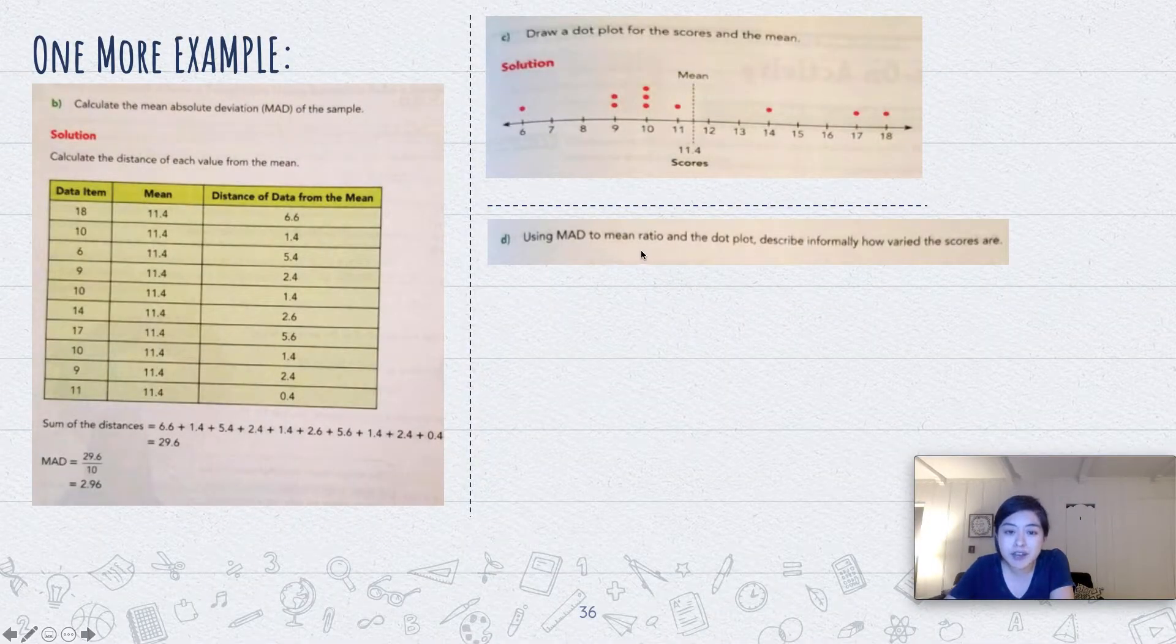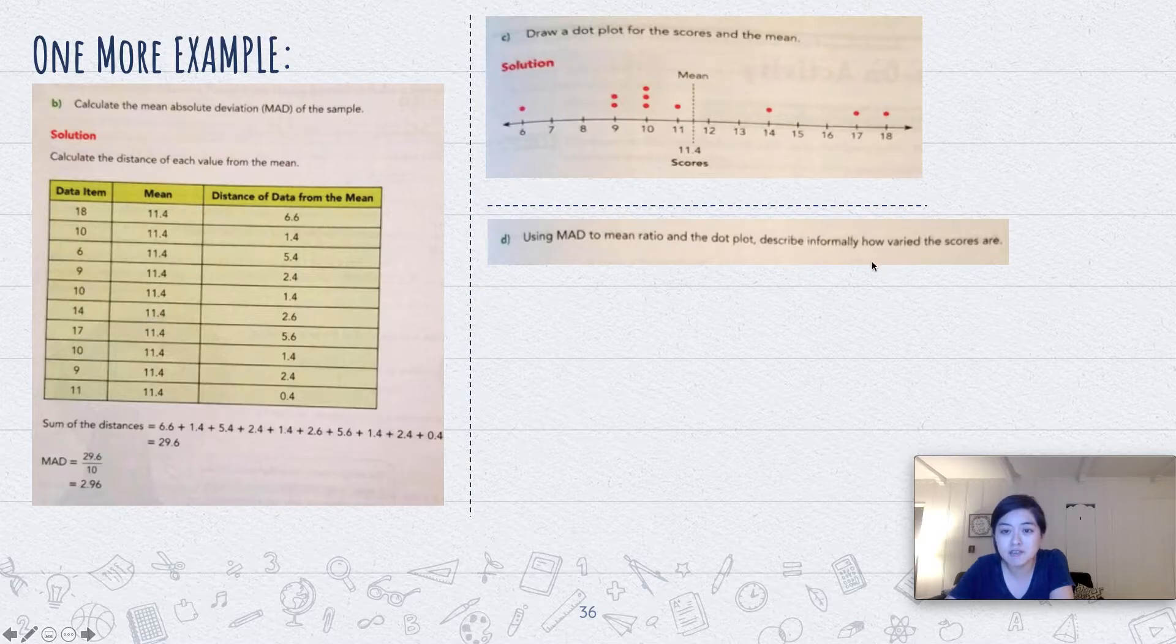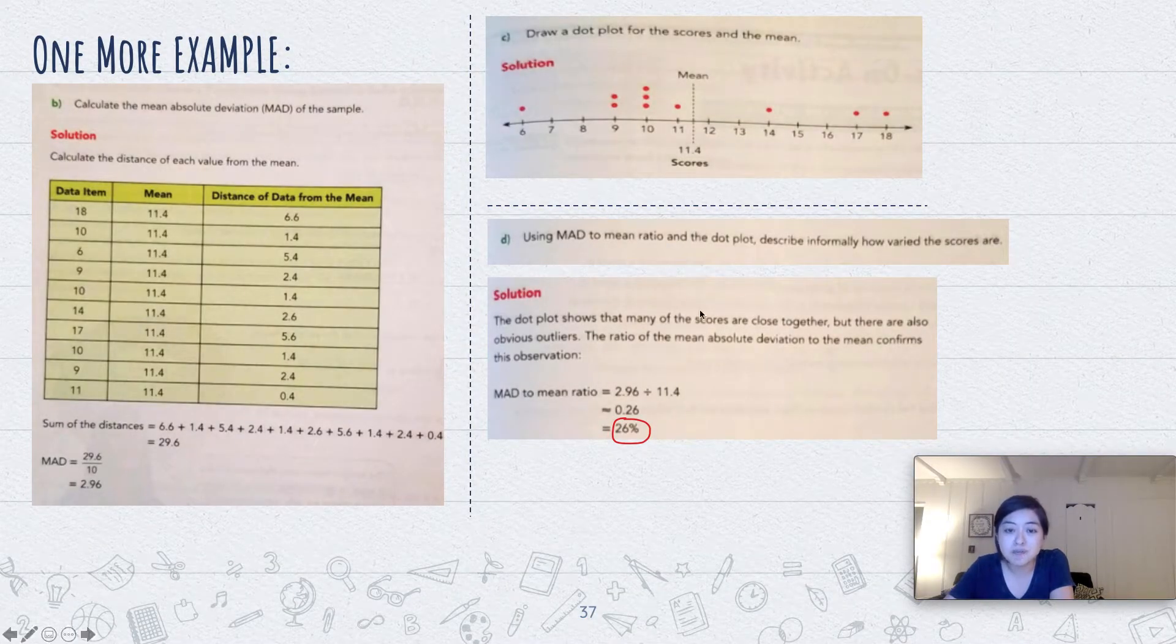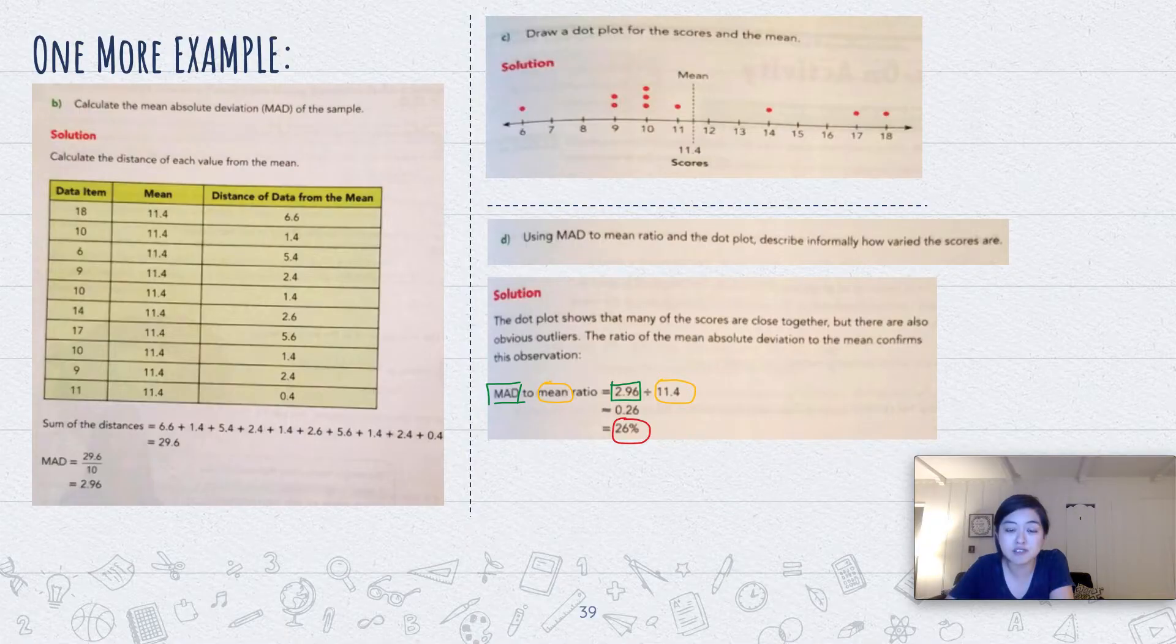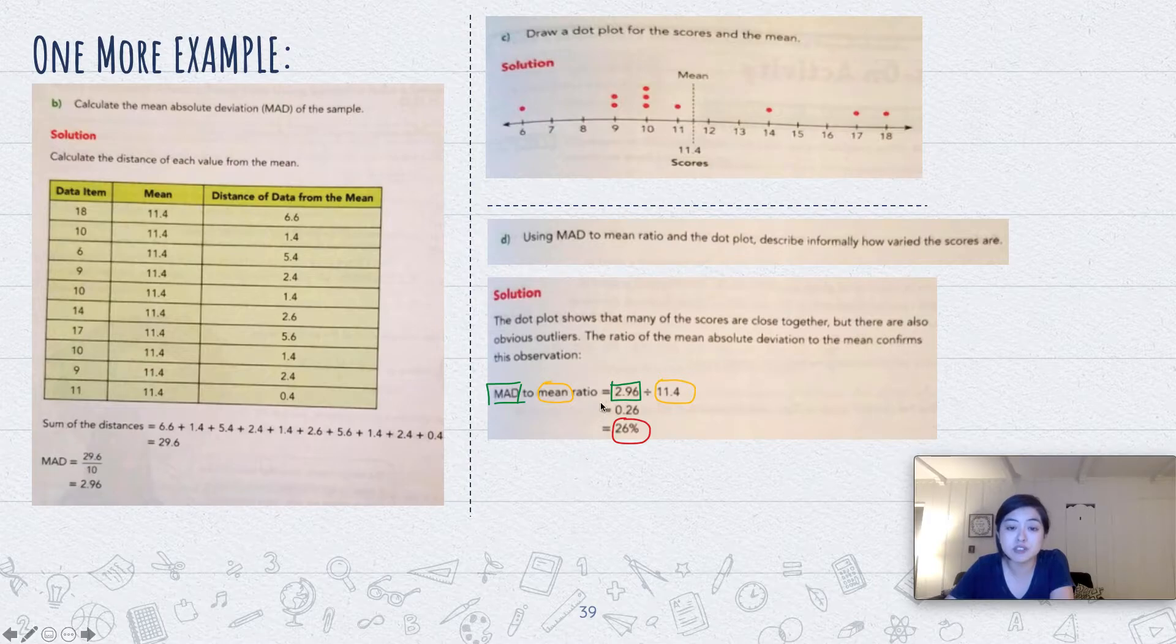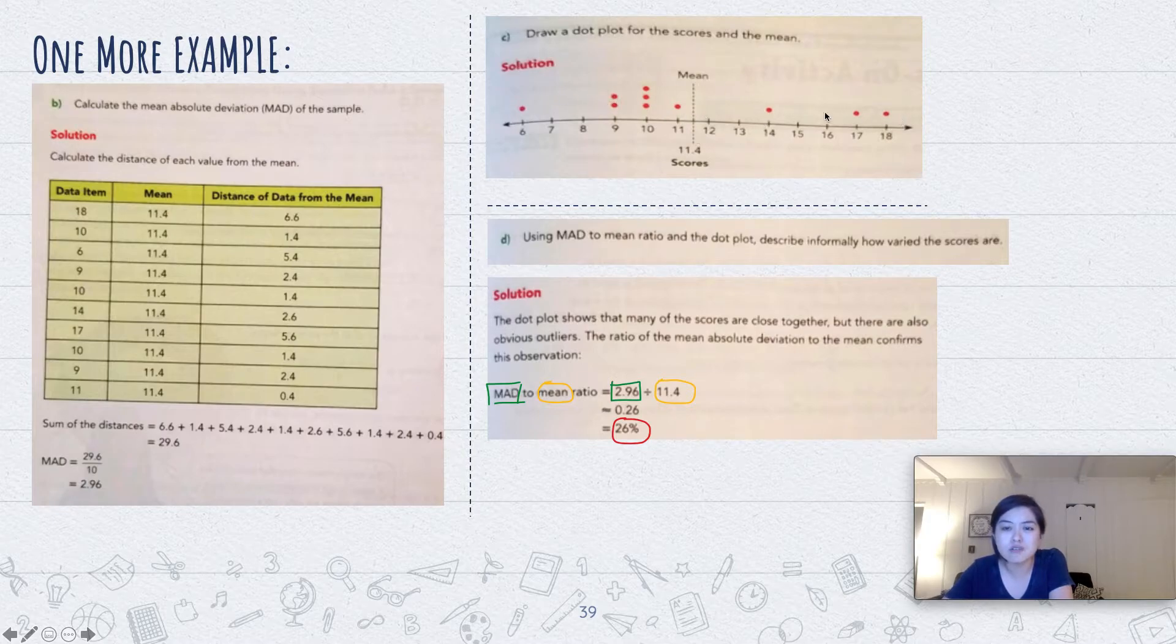And then using the dot plot, describe informally how varied the scores are. So first, let's find the MAD to mean ratio. You're going to take MAD, which is 2.96, and then divide it by the mean, which is 11.4, and you get 0.26, which is 26%. And look at the mean and look at the data values. You know, some outliers that are quite far, like this 6 and at 18 and 17, they're quite far from the mean, aren't they? So they will affect the variability here. And 26% shows that it's somewhat varied.